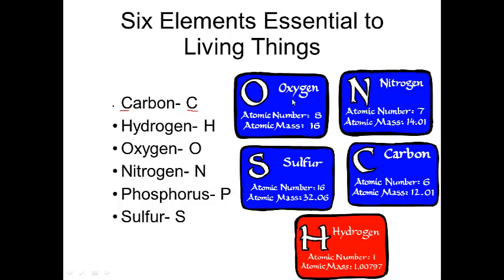So oxygen, we can take a look, has an atomic number of 8. So that means it has 8 protons. It also means it has 8 electrons.